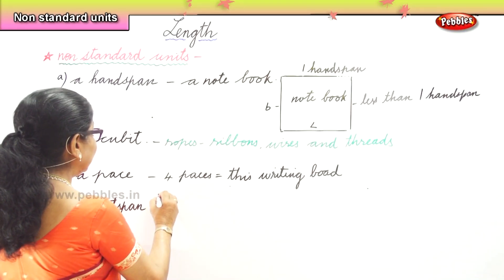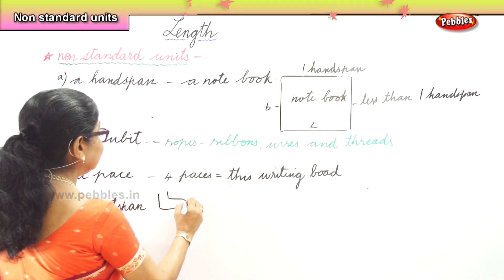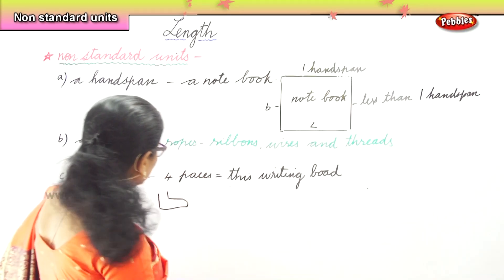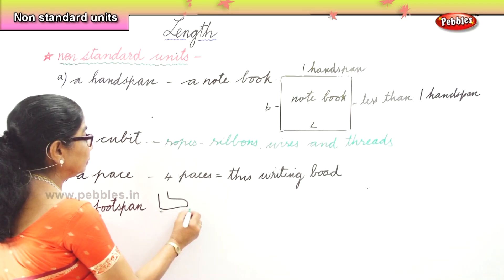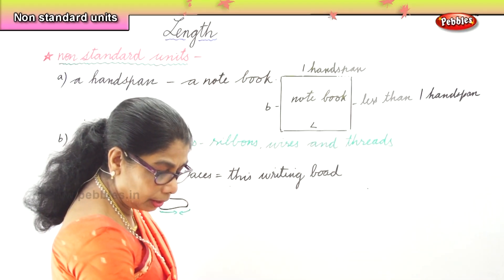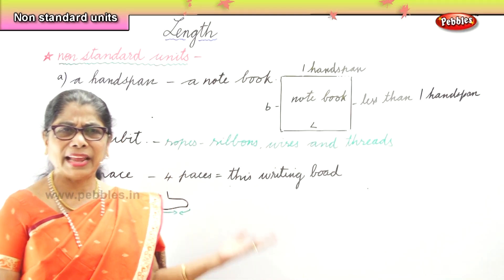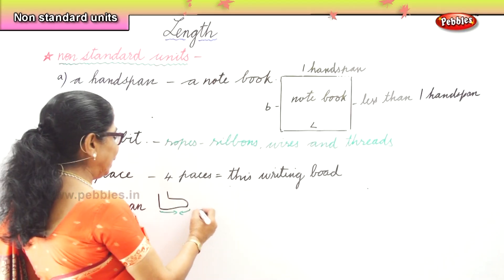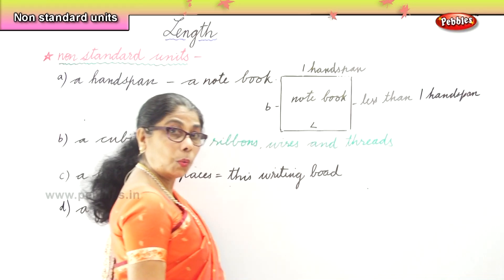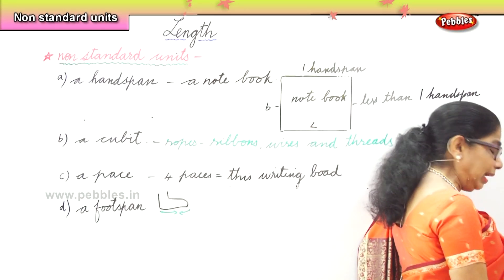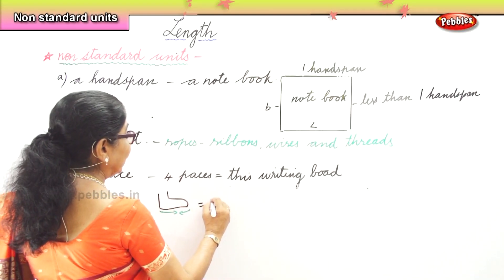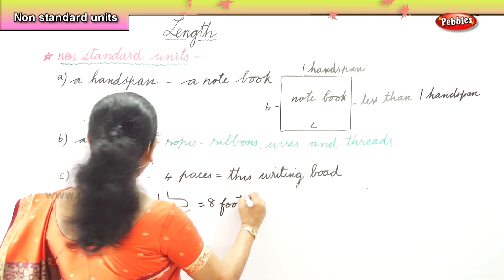So if you have your leg kept like this, this is called a foot span — from here till here. We can also measure anything using foot span: a classroom, a table. Now I am going to measure this writing board in foot spans. One, two, three, four, five, six, seven, eight. This writing board is eight foot spans.